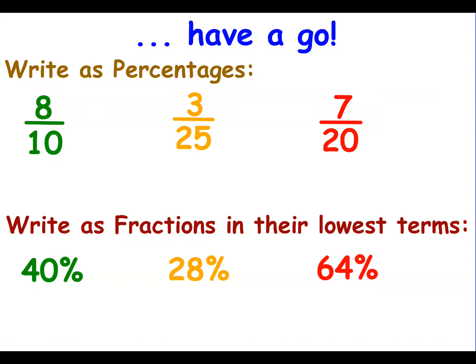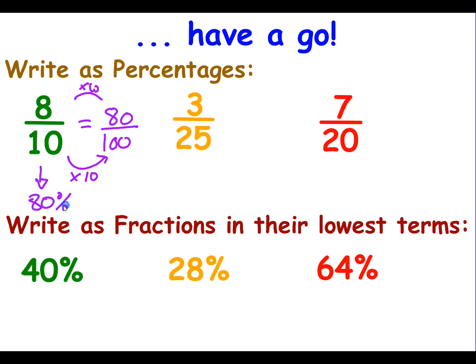Let's have a go at doing that loop — changing between fractions and percentages. Have a go at these and see how you get on. Now let's look at the answers. To turn fractions into percentages, I need a denominator of 100. To get from a denominator of 10 to 100, I multiply by 10. Do the same to the numerator and I end up with 80 over 100. So the fraction 8 over 10 is the percentage 80%.